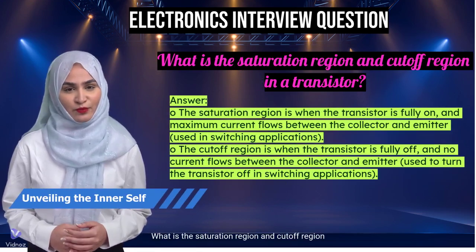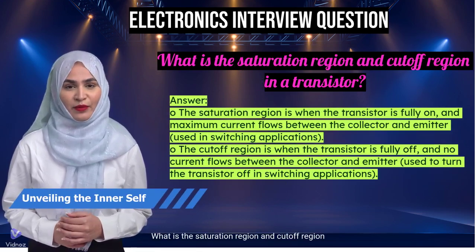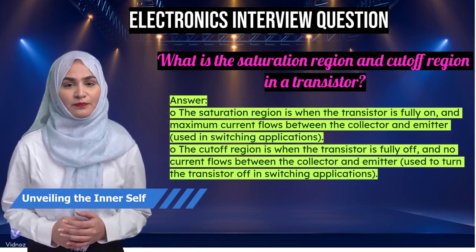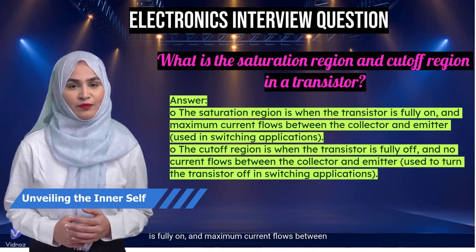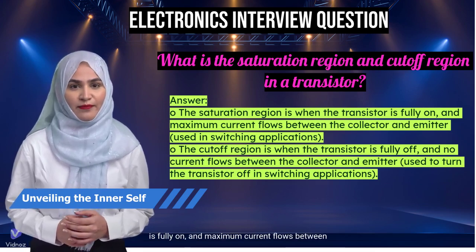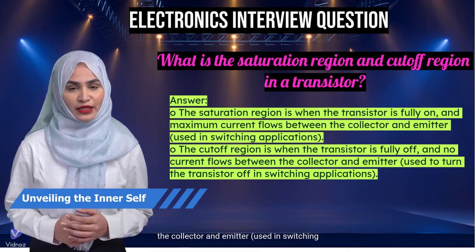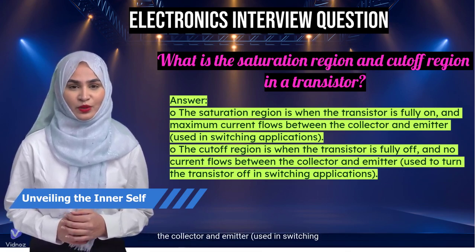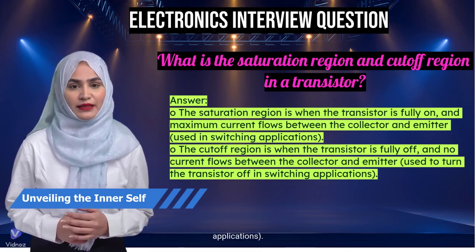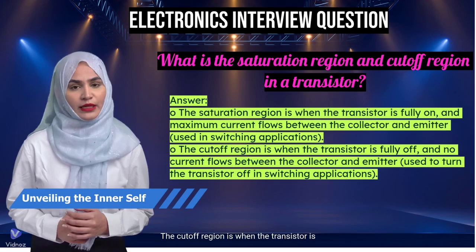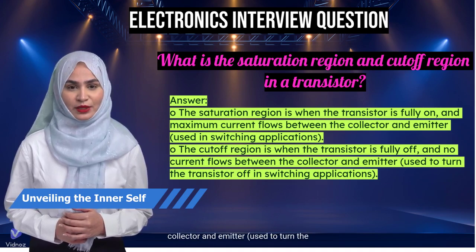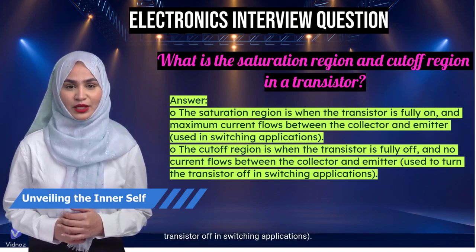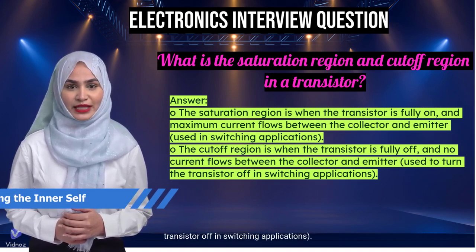What is the saturation region and cutoff region in a transistor? The saturation region is when the transistor is fully on and maximum current flows between the collector and emitter, used in switching applications. The cutoff region is when the transistor is fully off and no current flows between the collector and emitter, used to turn the transistor off in switching applications.